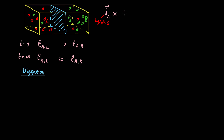We know that the flux is proportional to the negative difference in the density of species A across the two sides. I'm going to write this in terms of a gradient, which is more general. There is a difference in the density of species A along this axis — let's call this axis Z. So it's the gradient of the density in the Z direction. If there is no difference, as at t equals infinity where the density of species A on the left and right is the same, then this gradient is zero, so there will be no flux.